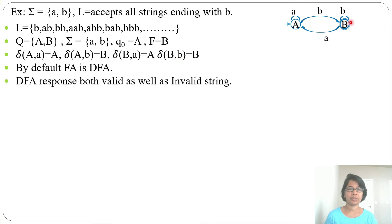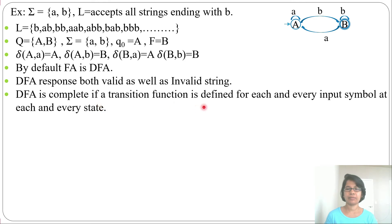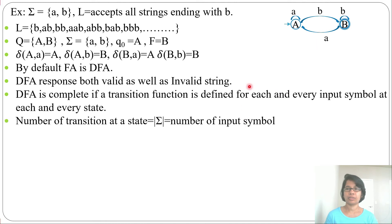By default, an FA is a DFA, so DFA responds to both valid as well as invalid strings. A DFA is complete if the transition function is defined for each and every input symbol at each and every state. It is complete here because from every state there is a transition for every input symbol — from state A for a and b, from state B for a and b. The number of transitions at a state equals the number of input symbols. So at state A, 2 transitions; at state B, 2 transitions. Every string has only one transition path — a string can be processed in only one way.